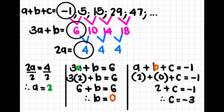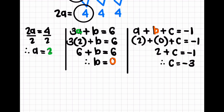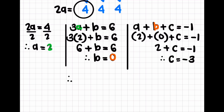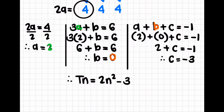So b is 0. Now I have a equals 2 plus b equals 0 plus c equals negative 1. So 2 plus 0 is 2, plus c equals negative 1. Therefore c equals negative 1 minus 2, which is negative 3. So a equals 2, b equals 0, and c equals negative 3. Therefore the nth term is tn equals 2n squared minus 3.